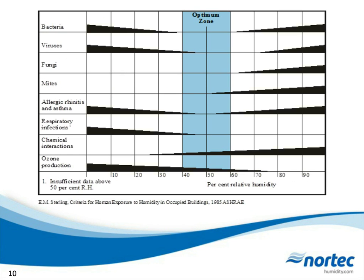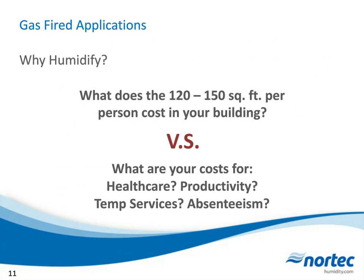The AHRI community is actually working on an updated version of this chart, but what we see is that bacteria and viruses, as well as allergy-causing fungus, tend to die off much faster within the optimum zone highlighted on screen. Anywhere between 40% to 60% relative humidity is where we like to hold our spaces in order to kill flu viruses or dangerous bacteria that could make us sick. There's a cost associated with humidification, but you have to compare that cost against healthcare costs, productivity costs, temp service costs, and absenteeism.